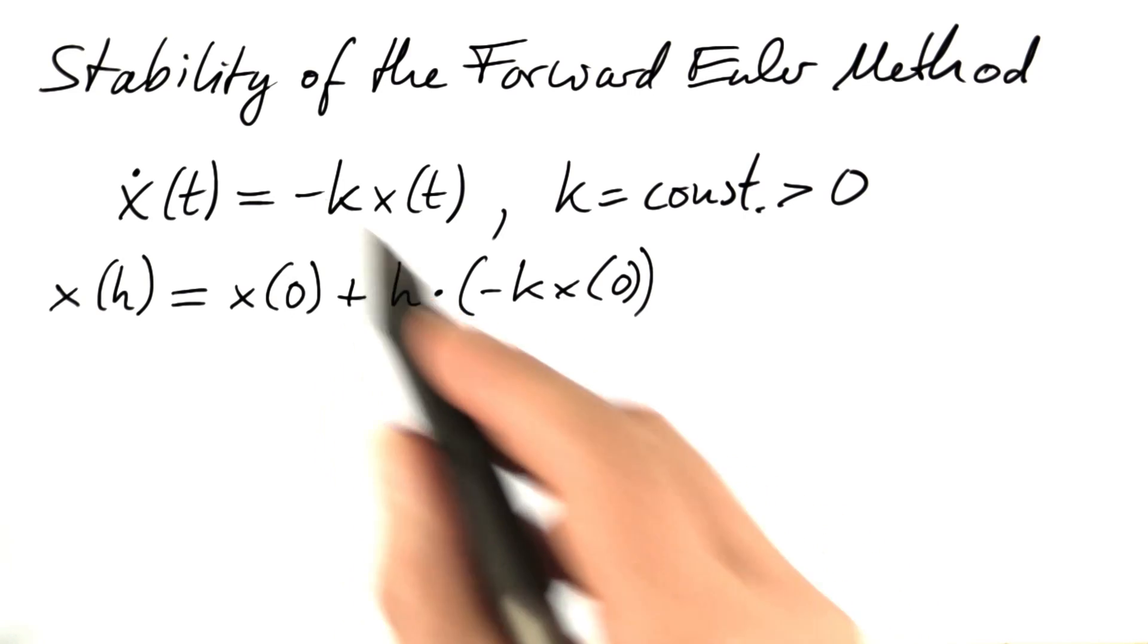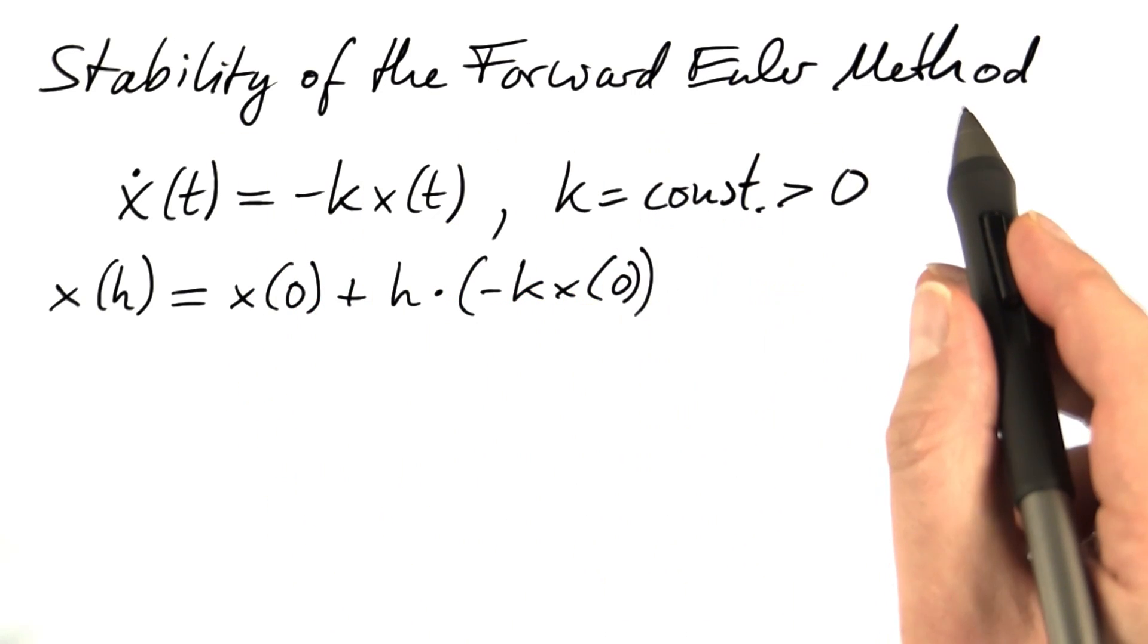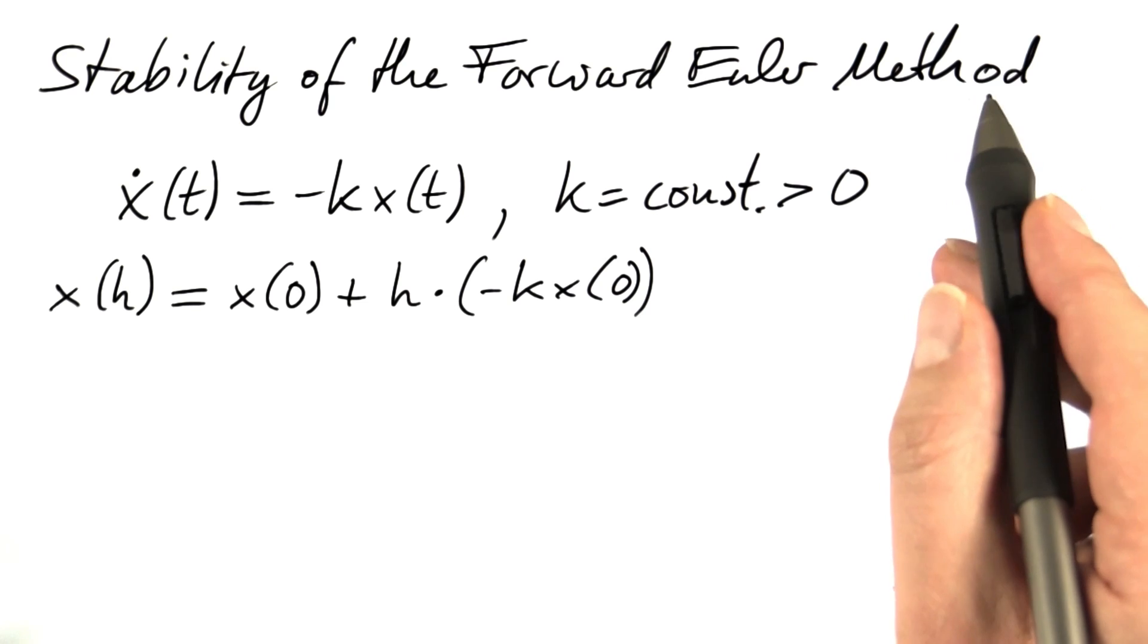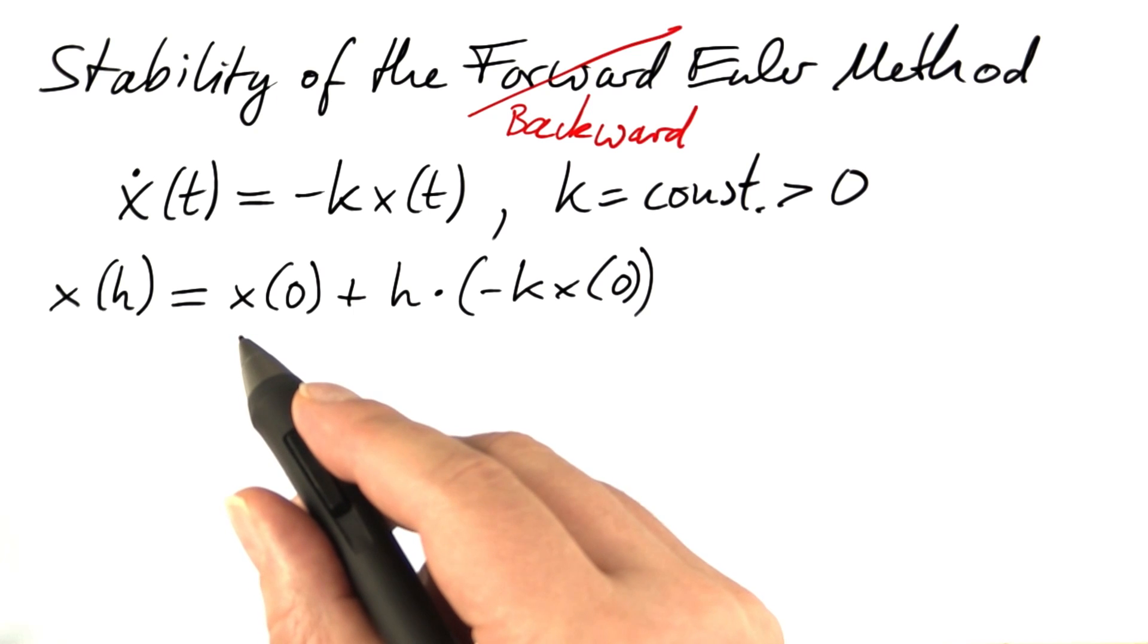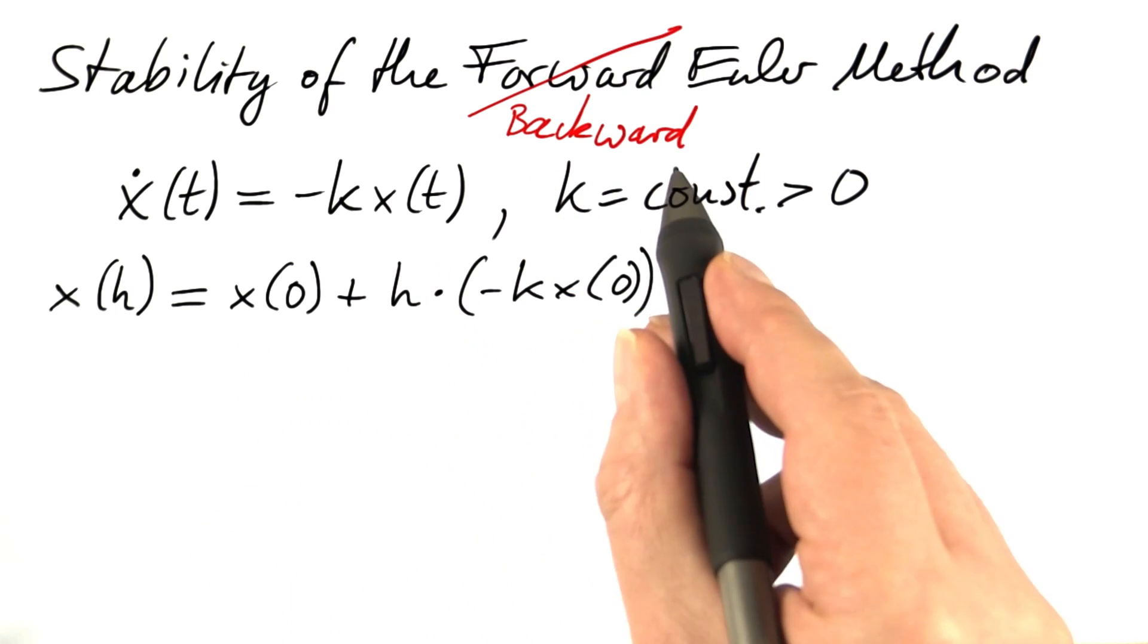In the quiz, we analyzed the stability of the forward Euler method. Now we introduce some changes to turn the forward Euler method into the backward Euler method. This method is called an implicit solver. We are going to see why.